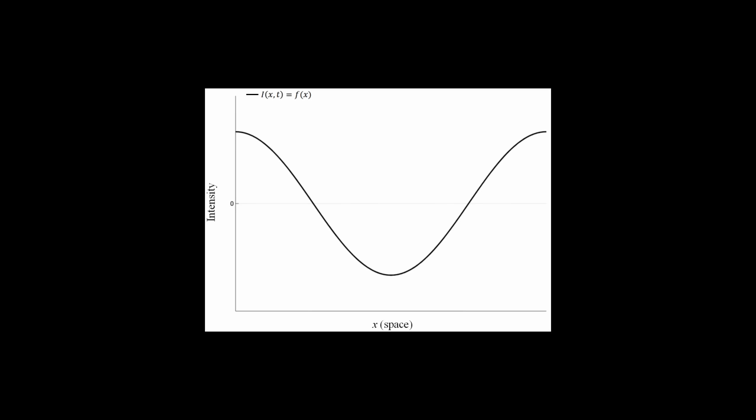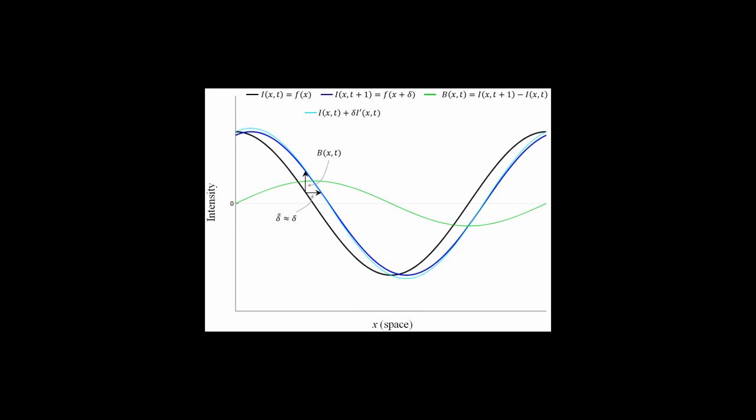Interestingly, temporal color amplification can also be used to amplify spatial motion. Consider, for example, this 1D illustration showing a translated wave at two time instants. For a smooth image and small motion, we can filter the signal temporally and get a good approximation to the translated wave. By amplifying the temporal signal, we can approximate a larger translation, essentially producing a motion-amplified sequence. This is analyzed in more detail in the paper.